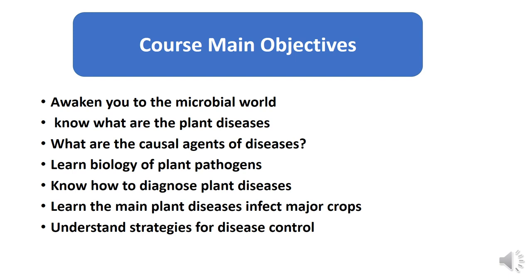Next, you will know how to diagnose plant diseases — both field diagnosis and lab diagnosis — during major plant disease infections on major crops such as vegetables or orchard crops. You will also understand strategies for disease control, including different strategies like exclusion, eradication, and the use of chemical or biological control, in order to make the best integrated management program to control plant diseases.